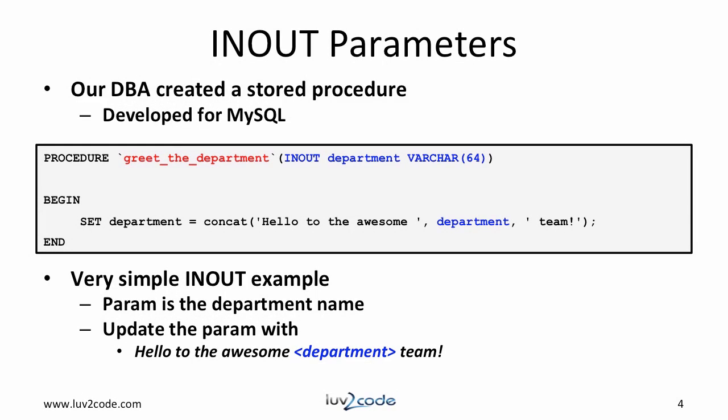Let's learn about in-out parameters. We'll pass in a parameter. The stored procedure will read the parameter and update it with a value. In this example, our DBA created a stored procedure called greet_department. It's a very simple example — it simply reads the parameter name for the department. All the stored procedure will do is create a new string based on the department name: 'hello to the awesome department team', and plug in the value of the team. We could get really fancy and do some SQL calls to the database, but for now let's just keep it simple.